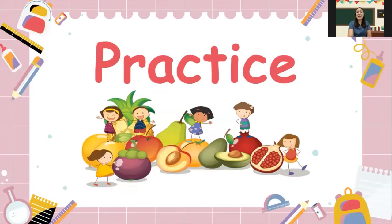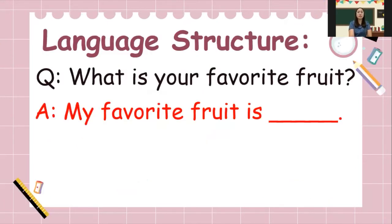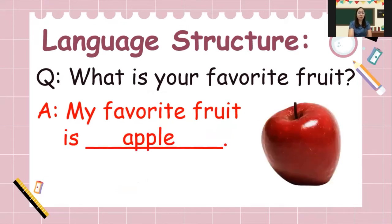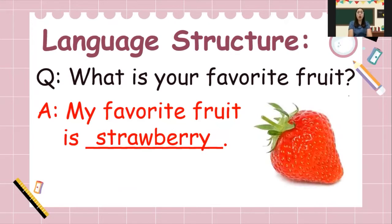So now let us have a practice. For our language structure today, we have the question: What is your favorite fruit? Answer: My favorite fruit is ___. For example — Question: What is your favorite fruit? Answer: My favorite fruit is apple. Next. Question: What is your favorite fruit? Answer: My favorite fruit is strawberry.